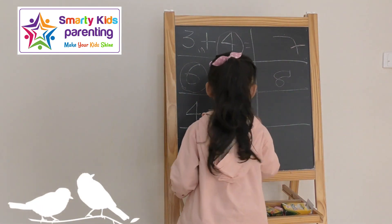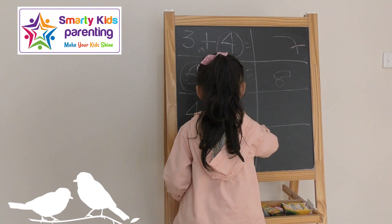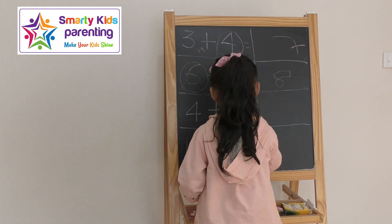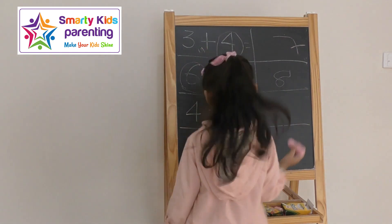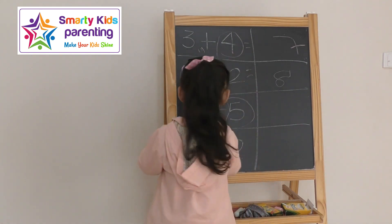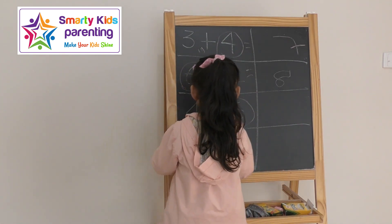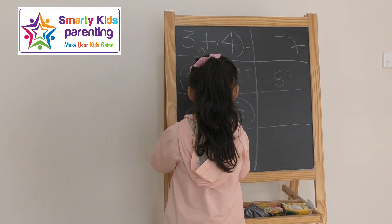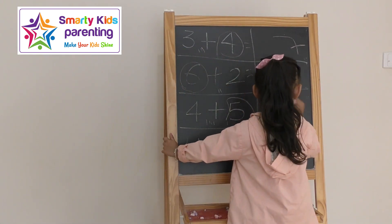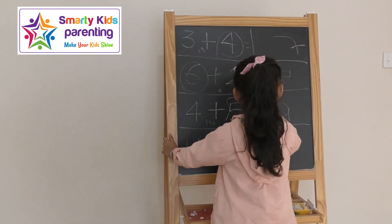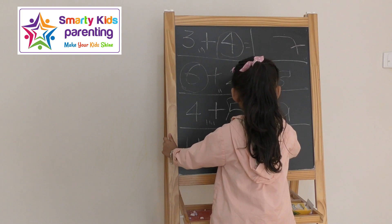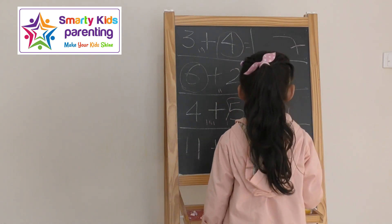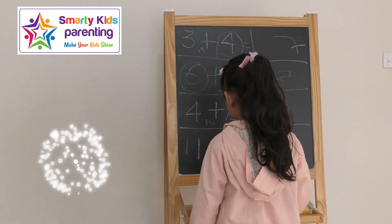So five is the bigger number, so you count four after five. Six, seven, eight, nine. Do you want to read it? Four plus five equals nine.